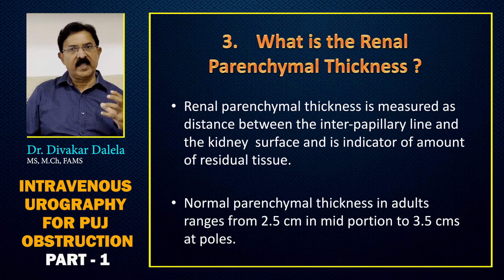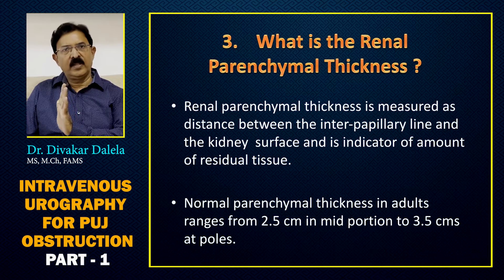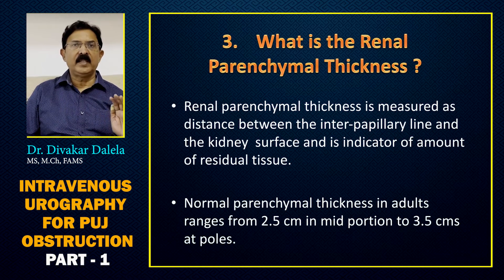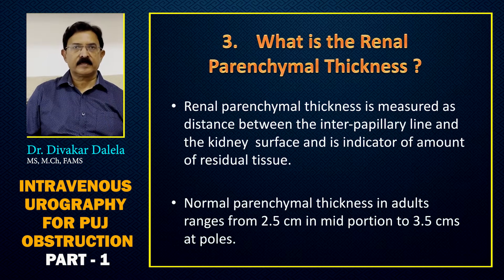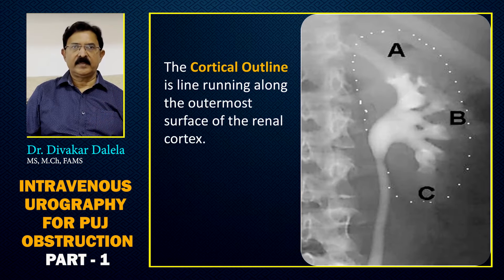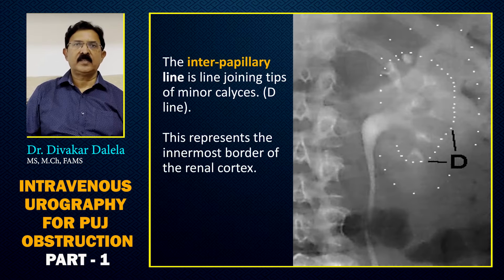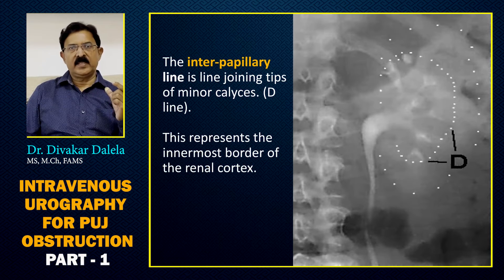Parenchymal thickness is measured as the distance between the interpapillary line and the line on the kidney surface. Normal parenchymal thickness in adults ranges from 2.5 cm in the mid portion to 3.5 cm at the poles. The cortical outline is drawn by dotted lines running along the kidney outline. The second line connects the minor calyces, representing the innermost border of the renal cortex — the interpapillary line — and the distance between the two lines is the parenchymal thickness.